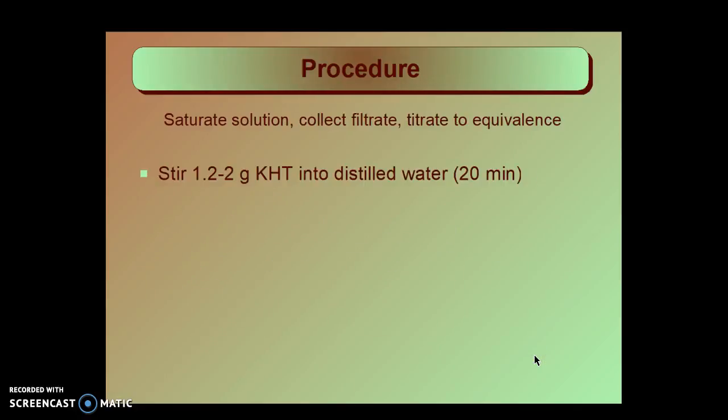So you saturate the solution, you collect the filtrate after you filter out the solid that's left over. You then titrate a given amount of that to equivalence. Just to repeat, you stir 1.2 to 2 grams of KHT into distilled water, and your stirring goes for 20 minutes, preferably with an automatic stirrer. You then take that saturated solution and filter out any solid, which you can throw away. You collect the filtrate in a dry flask so you're not doing anything to make that less concentrated.